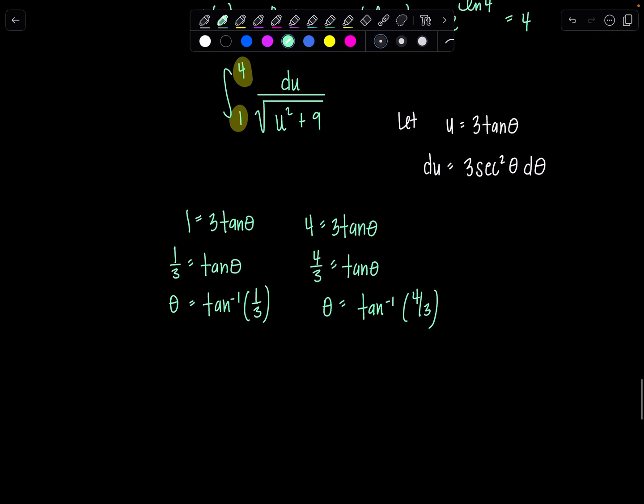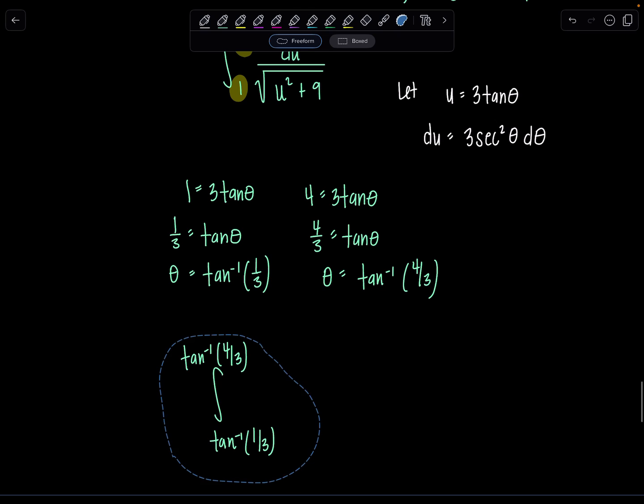Technically, you should just be writing out those new limits like that. So you would have tan inverse of 1 third and then tan inverse of 4 thirds. It's just a little messy. So if you want instead, and just check with your instructor before you do this because I don't want anybody to lose points or get in trouble, we can call this angle alpha, and then we can call this angle beta, if you like. That way it's just a little bit easier and cleaner when we write our limits of integration. And now I can say this is going to go from alpha to beta.